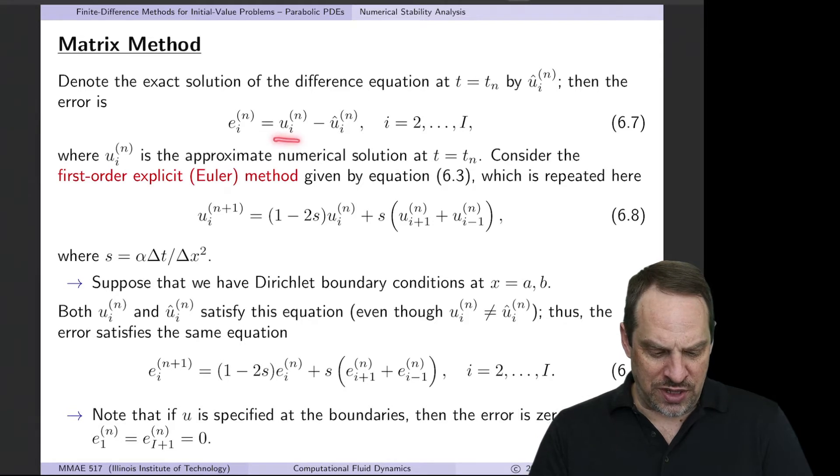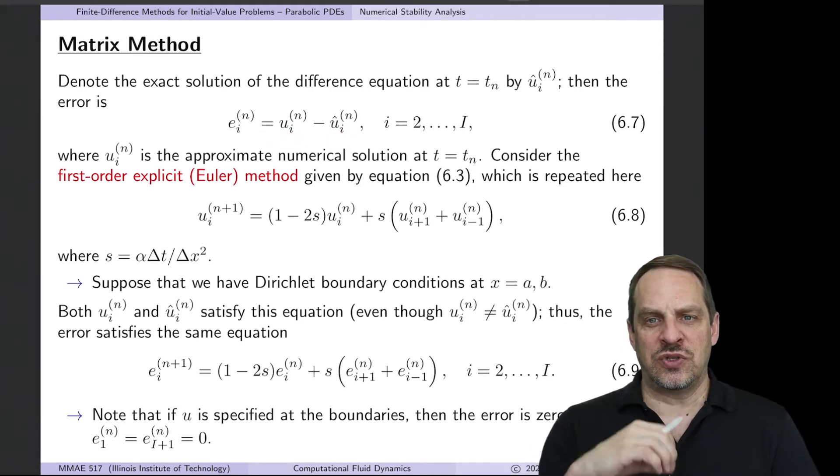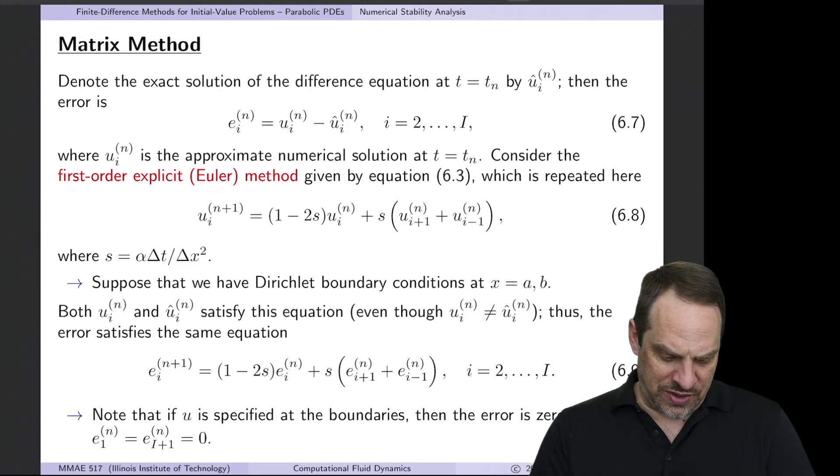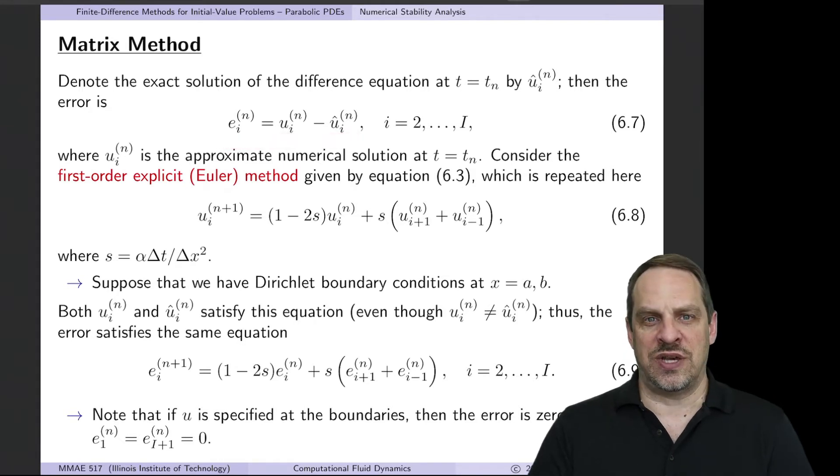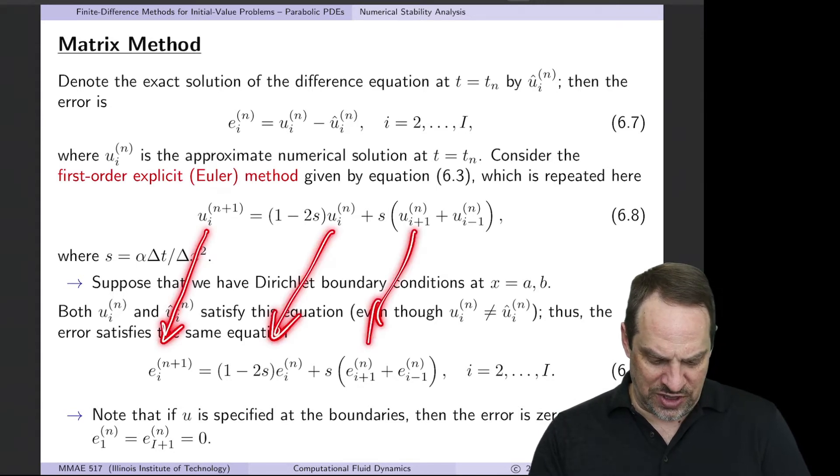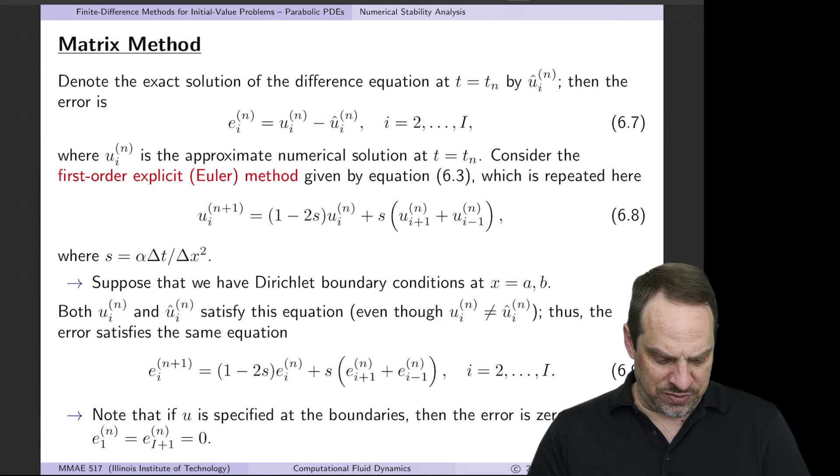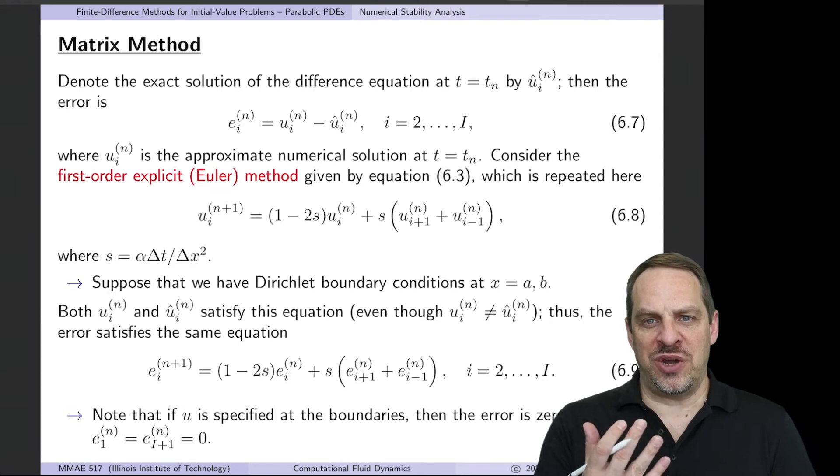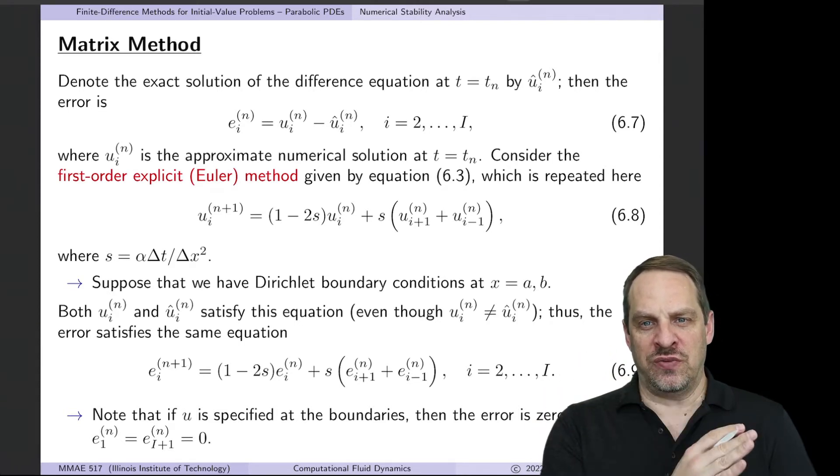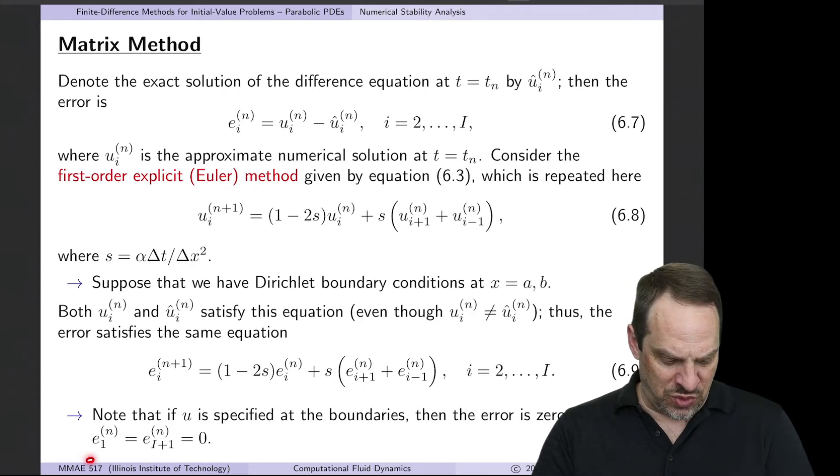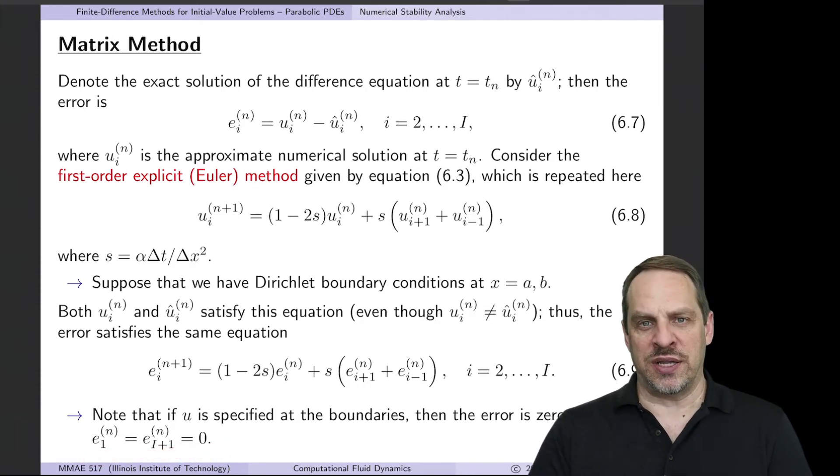Let's suppose for now that we just have Dirichlet boundary conditions at both ends of the domain. Now because u and u hat both actually come from solutions of the difference equation, they both of course satisfy the difference equation. They are not the same, but they both satisfy the difference equation, therefore if that's the case, then the error has to satisfy that same difference equation as well. So we can simply replace the u's with e's here. So e_i^{n+1} is equal to the right hand side with the u's replaced with e's. Now if we do have Dirichlet boundary conditions on both ends, we know the value of u at both ends, and therefore the e would be 0, the error would be 0 at 1 and capital I plus 1.